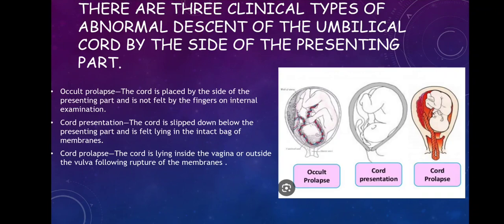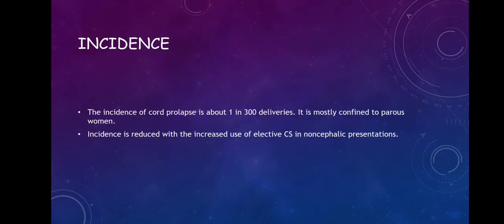In cord prolapse, the cord is lying inside the vagina or outside the vulva following rupture of membranes. The difference between cord presentation and cord prolapse is that in cord presentation the membranes are intact, and in cord prolapse it is after rupture of membranes. The incidence of cord prolapse is about 1 in 300 deliveries and is mostly confined to parous women. Incidence is reduced with the increased use of elective caesarean sections in non-cephalic presentations.